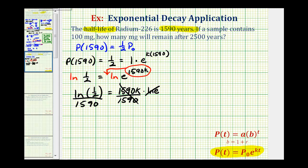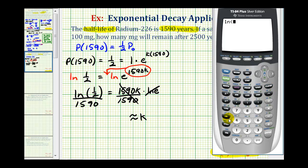And now we'll go to the calculator to determine the approximate value of k. So we'll have natural log 0.5 or natural log one-half divided by 1,590. Notice how this is giving us the value in scientific notation. This E negative four means times 10 to the negative fourth power. So as a decimal, this would be approximately -0.000436.